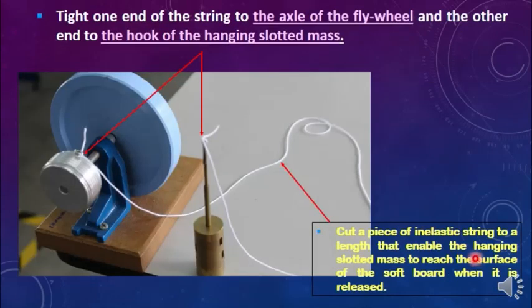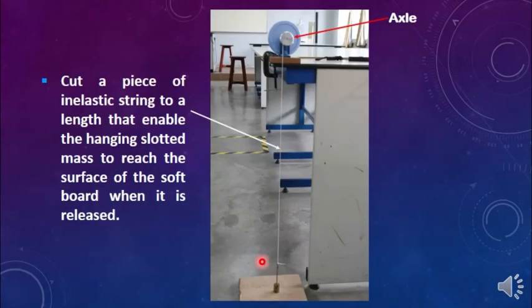Cut a piece of inelastic string to an adequate length. Then, tie one end of the string to the screw attached to the axle of the flywheel and the other end to the hook of the hanging slotted mass. The length of the string must be able to let the hanging slotted mass reach the surface of the softboard when it is released from a certain height.